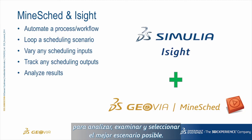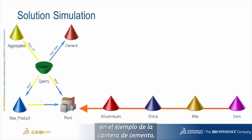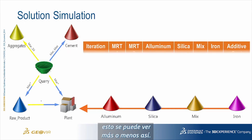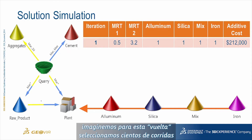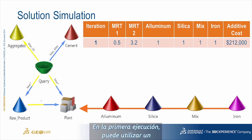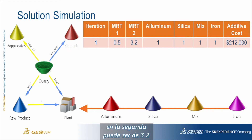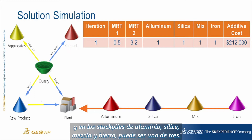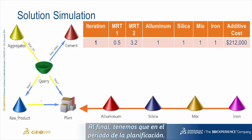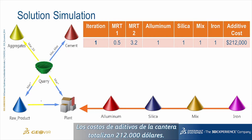Practically speaking, in our simple cement quarry example, let's imagine we pick several hundred runs for this loop. In the first execution, the first material ratio target might be 0.5, the second material ratio target might be 3.2, and for the aluminum, silica, mix, and iron stockpiles it may use stockpile one of three. We end up with an additive cost to the quarry of $212,000 for the life of the schedule.